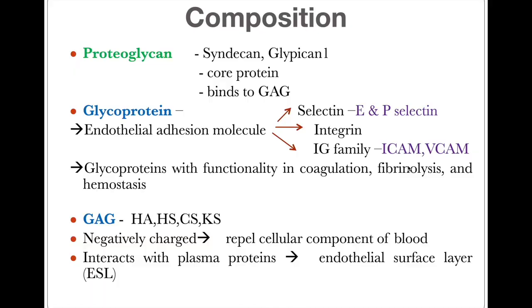Proteoglycan is considered the important backbone molecule of the endothelial glycocalyx. It consists of a core protein to which various glycosaminoglycan components are attached. Core proteins like syndecan and glypican have a firm connection to the cell membrane. Glycosaminoglycans are made up of heparan sulfate, chondroitin sulfate, keratin sulfate and hyaluronic acid. A specific characteristic is that they are negatively charged, which causes them to repel the cellular components of blood — RBCs, leukocytes and platelets — from the endothelium.